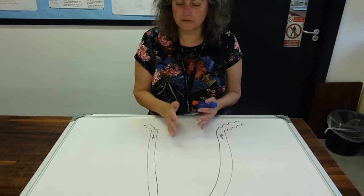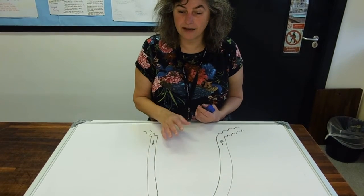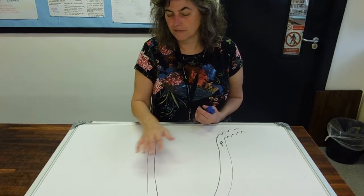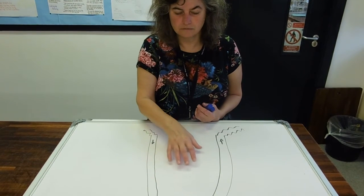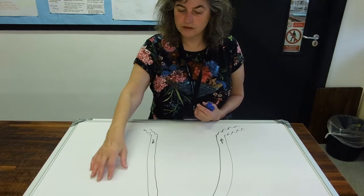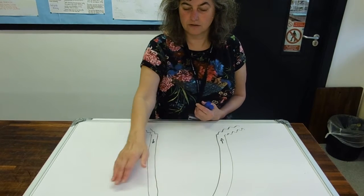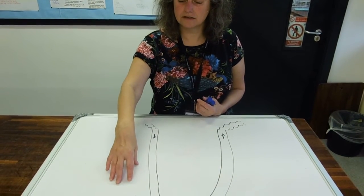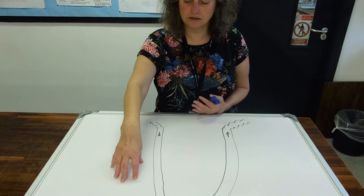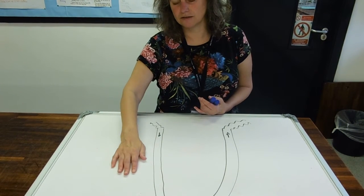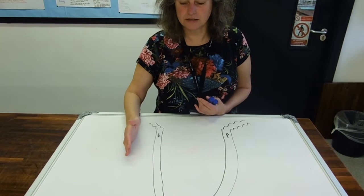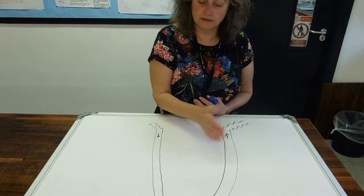The whole purpose of the loop of Henle is to create a very salty medullary region, so all of this region in between the loops are called the interstitial regions, it's full of interstitial fluid of the medulla. And it's salty, which means it's got a very low water potential.